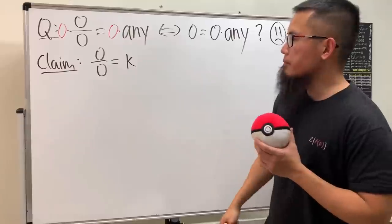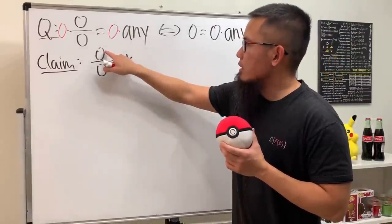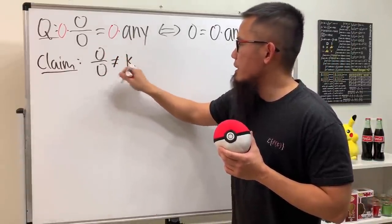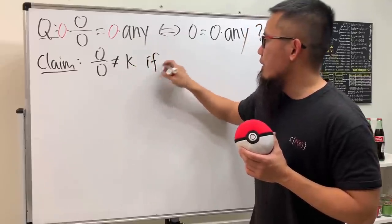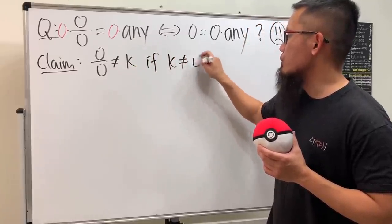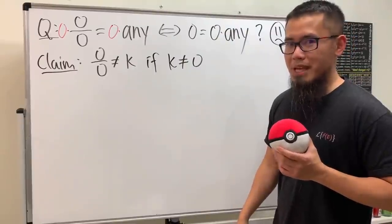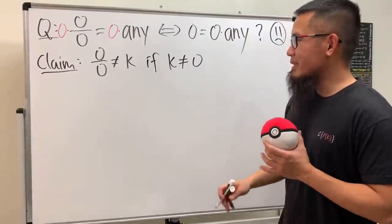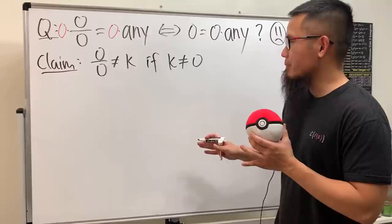Then in that case I'm going to write this: I'm calling that zero over zero cannot be equal to a number if the number is not equal to zero. Pretty kind of a lot of negations, huh?